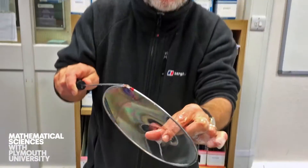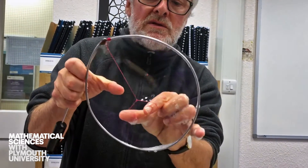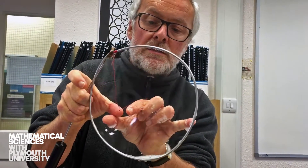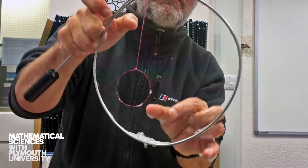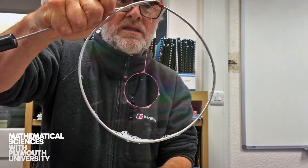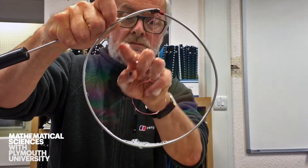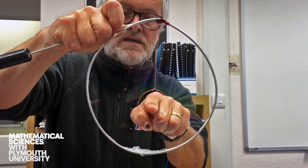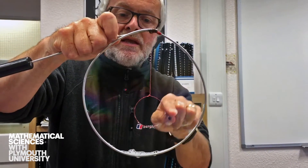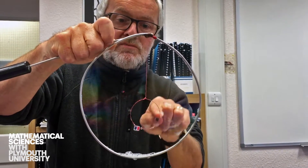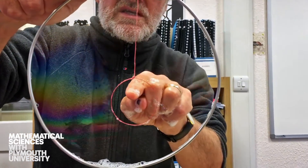So we pull it out, we have a soap film — you can perhaps see it glistening — and then I'm going to just try to pop it there in the middle, pull my finger away, and there we have a circle. So it's making the soap film as small as possible outside to make the area inside as large as possible, and the circle is the shape that has the largest area inside it for a given fixed perimeter.